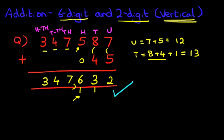So that is the addition of a six digit number with a two digit number using the vertical format.